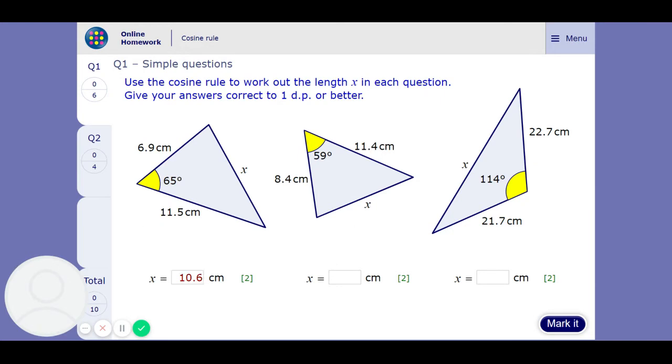And the next one. So same sort of thing. It's just going to be 8.4 squared plus 11.4 squared take away 2 times 8.4 times 11.4 times cos 59. Square root that, you're going to get 10.1.